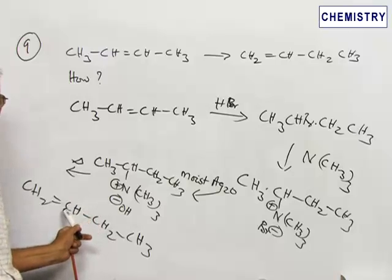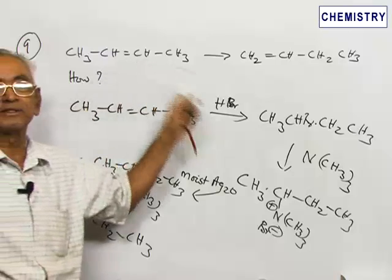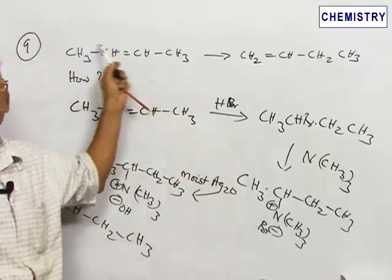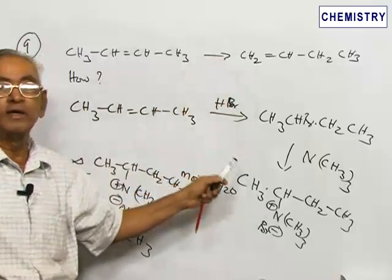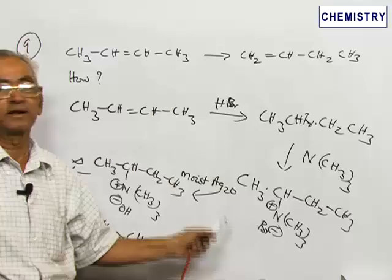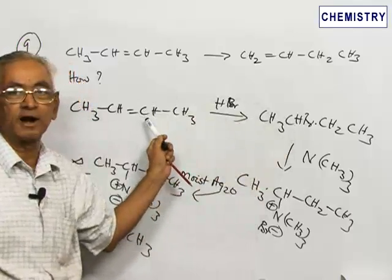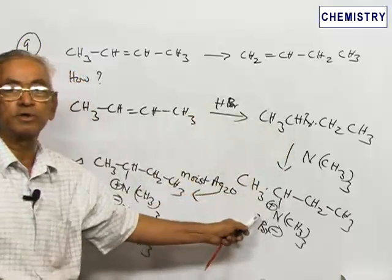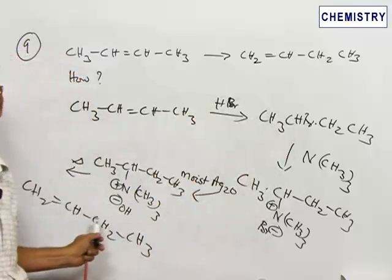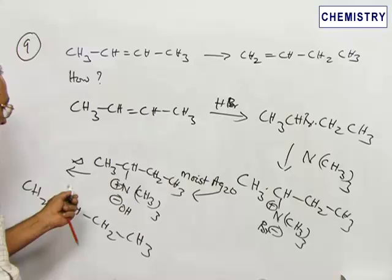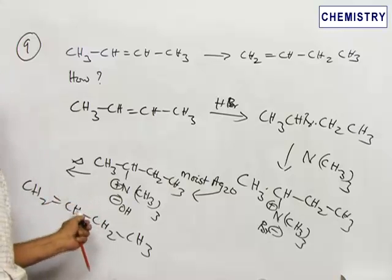This is one of the standard methods of converting 2-butene to 1-butene involving Hofmann elimination instead of Saytzeff elimination. If the bromide is directly eliminated, it gives an internal olefin. If the quaternary ammonium salt undergoes elimination, it gives a terminal olefin, which is less substituted.